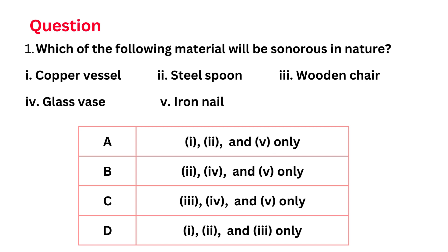Now that we have completed the physical properties of metals, let's solve one question from the Olympiad preparation guide. The question is: which of the following materials will be sonorous in nature? — copper vessel, steel spoon, wooden chair, glass vase, iron nail. As we know, copper vessel, iron nail, and steel spoon are metallic in nature, so they will produce a sonorous sound. So here our answer will be A.